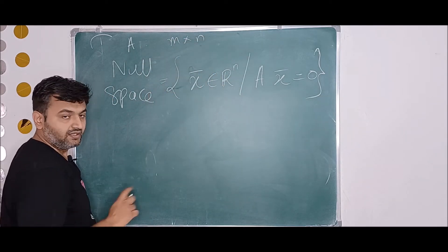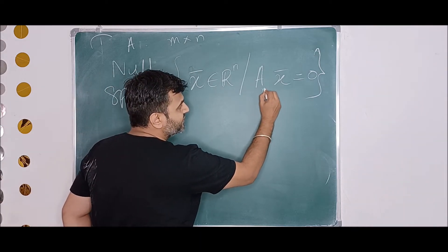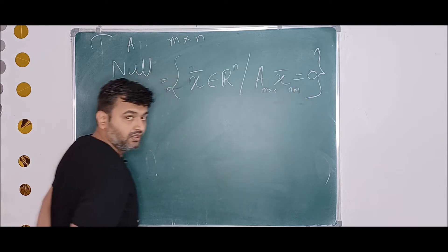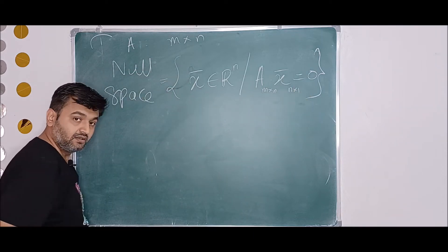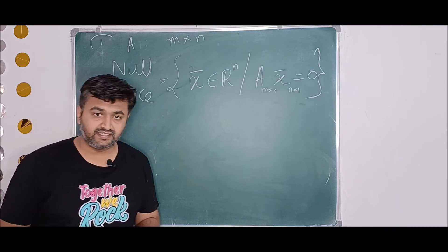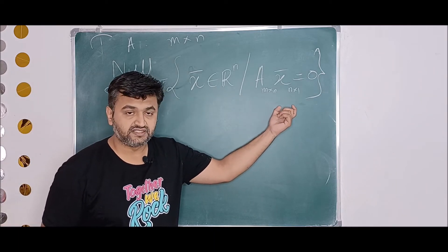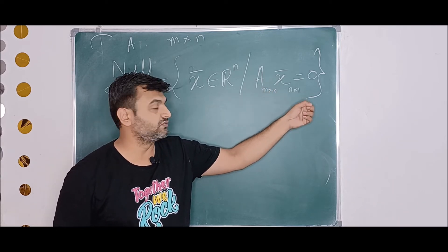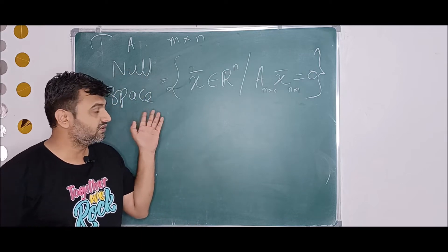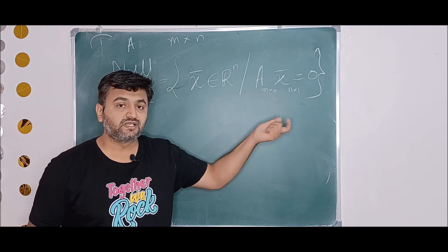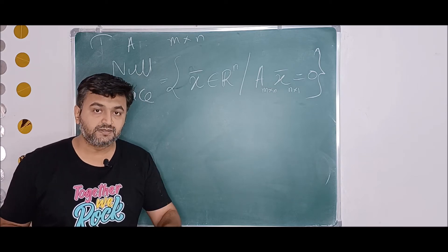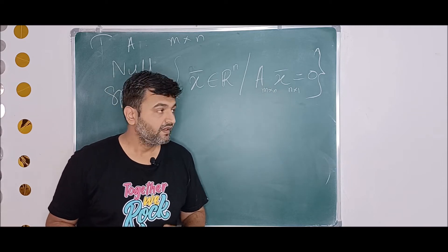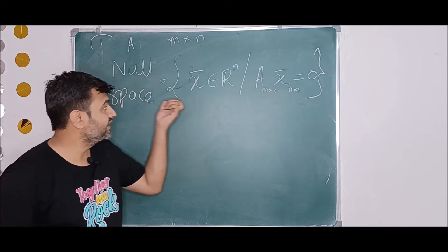Since A is M cross N, x-bar must be N cross 1, so x-bar is in R^n. The null space consists of all vectors x-bar in R^n satisfying A times x-bar equals zero. In other words, the null space is the solution space to the homogeneous system of linear equations A x-bar = 0.